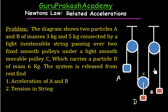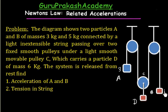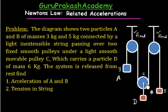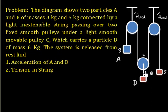This problem is from Newton's second law, subtopic on accelerations. The diagram shows two particles A and B of masses 3 kg and 5 kg, connected by a light inextensible string passing over two fixed smooth pulleys. Under the string sits a smooth movable pulley C, which carries a particle D of mass 6 kg.